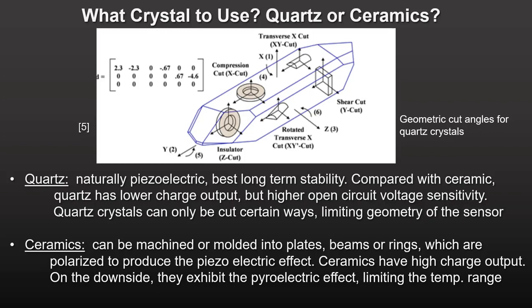The original piezoelectric accelerometers used quartz for the sensor element. Quartz has the best long-term stability and does not exhibit the pyroelectric effect, meaning it does not generate spurious voltage when heated or cooled. On the downside, quartz has lower charge output than ceramics and high open-circuit voltage sensitivity. Its biggest disadvantage is that it can only be cut in certain geometries, limiting sensor designs — a problem somewhat similar to producing diamond jewelry, but at a much lower cost.